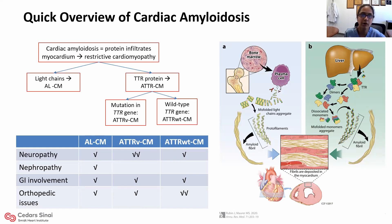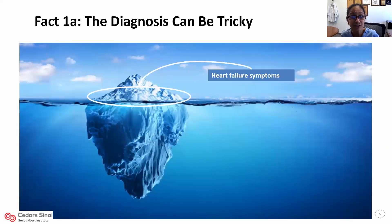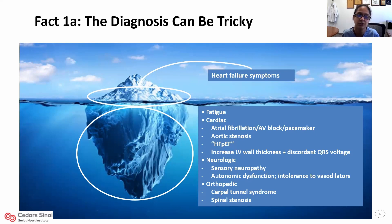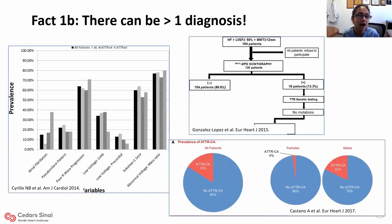When thinking about disparities, it's important to recognize unique features of cardiac amyloidosis. Fact 1a: the diagnosis can be tricky. Heart failure symptoms, while classic, are often the tip of the iceberg and a late finding. We can also see fatigue, atrial fibrillation, AV block, pacemaker, aortic stenosis, and HFpEF can coexist with amyloidosis, with increased wall thickness and discordant voltage. Neurological findings can include sensory neuropathy, autonomic dysfunction with intolerance to vasodilators, and orthopedic findings such as carpal tunnel and spinal stenosis. We have to think beyond the tip of the iceberg.